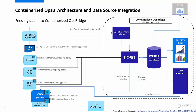Containerized OpsB data sources include Operations Agents (OA), which can collect metrics and generate events when specific conditions are met. The OpsB operations agent collector can pull metrics from operations agents. OA version 12.14 or higher can push metrics to COSO via Infrastructure Management Pack streaming policies. SiteScope can collect metrics and generate events, and push metrics to COSO via SiteScope streaming policies. Business Process Monitor (BPM) can periodically replay transactions between a user and a service, measure response time, and push metrics to COSO via BPM streaming policies.